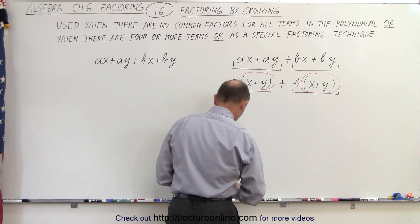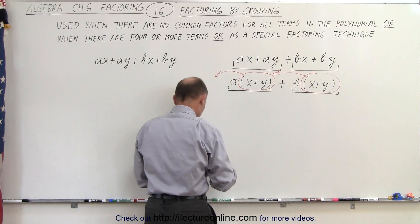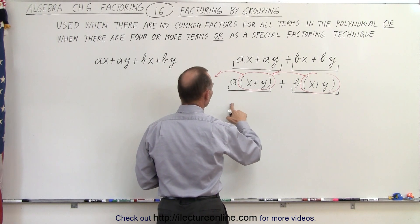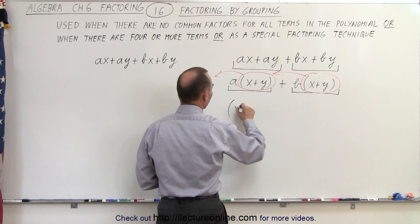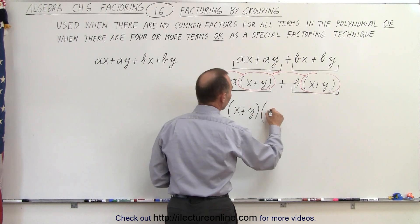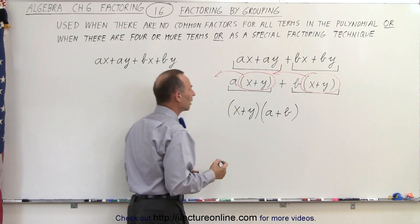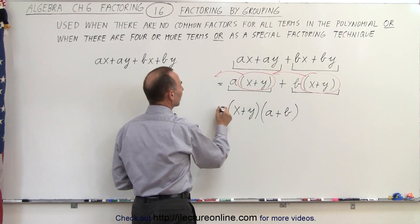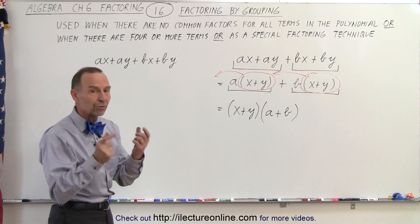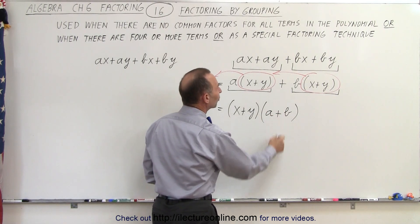When we factor out (x + y) from both terms, we end up with (x + y) times — from the first term we're left with a, and from the second term we're left with b. So the original four-term polynomial now becomes the product of two binomials: (x + y)(a + b).